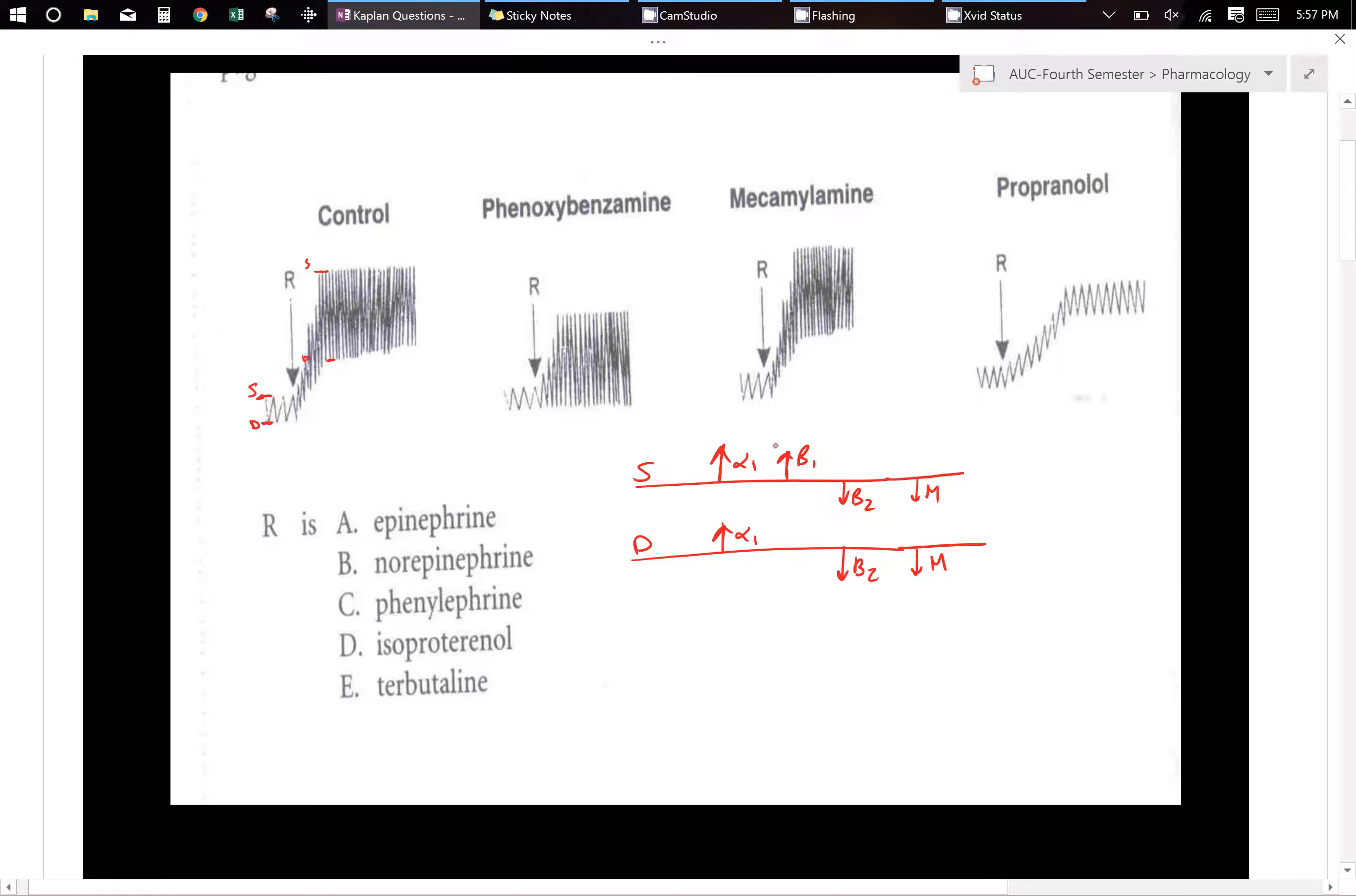So in the case of these questions let's take a look. The first thing we see in the control is that the blood pressure increases. Now with just increase we can deduce what it could possibly be.